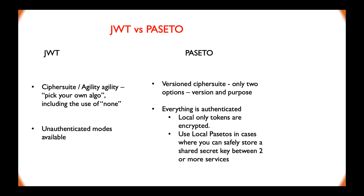JWT versus Passera. In JWT, it is pick-your-own algorithm, including the 'none' option. In Passera, we have two options — version and purpose — and combining them tells you which algorithms to use. This means that implementers know precisely what they are getting and should use for their particular applications or requirements. Everything is authenticated in Passera, and local tokens are always encrypted, so you don't accidentally leak sensitive information in a local system.